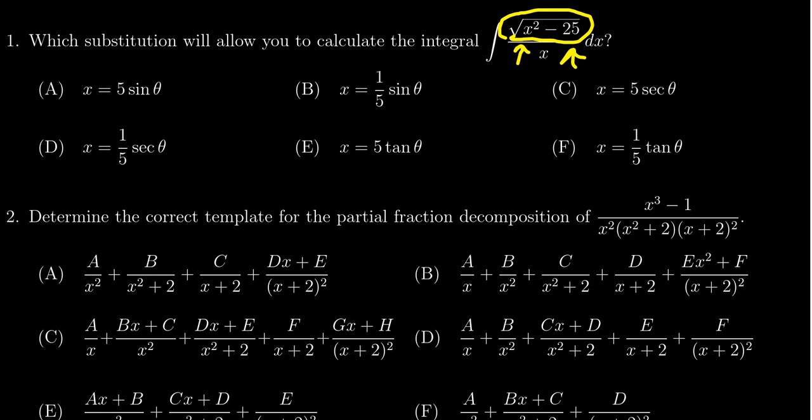Since the variable squared minus the constant squared is the form we have, this looks like a secant substitution. And since we have 25 which is 5 squared, this is going to lead to the correct response being c, x equals 5 secant theta. That would be the best trigonometric substitution to use.